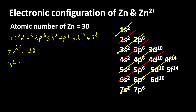Let us write the electronic configuration of zinc 2 plus: 1s2, 2s2, 2p6, 3s2, 3p6, 3d10. When forming cations, the electrons in the outer shell are first to leave. Here 4s is the outer orbital, so the electrons lost from zinc to form the 2 plus ion come from the 4s orbital.